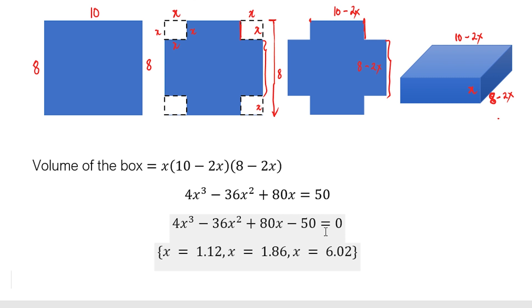And the one that's not valid is 6.02. Why? Look at this. If you have 10 minus 2x, imagine multiplying 6.02 by 2—that's 12 point something. Subtract that from 10, that will be negative 2.